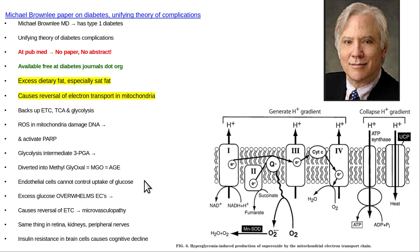In all the medical student books and residency books, there's always going to be a big picture of Banting and Best — the discoverers of insulin — because it's a drug. But the guy who actually figured out what happens in the disease, no one's ever heard of him.